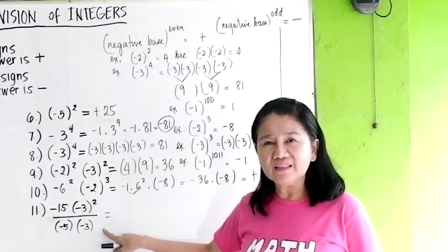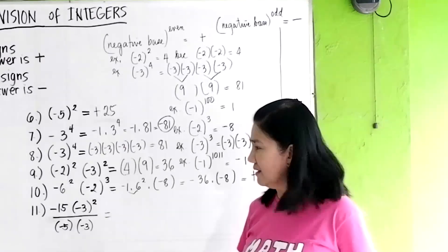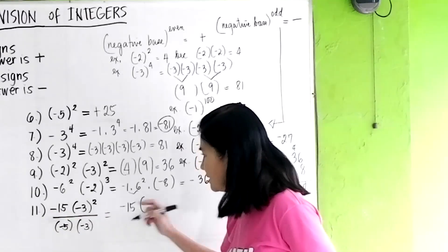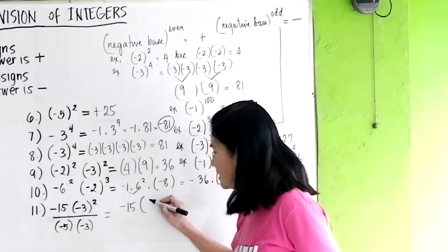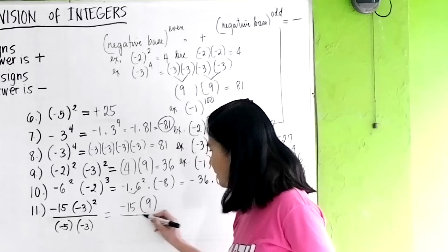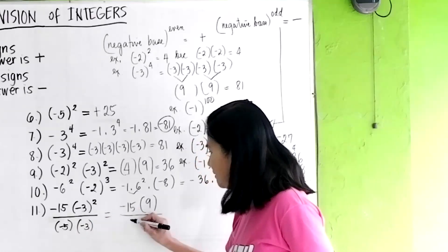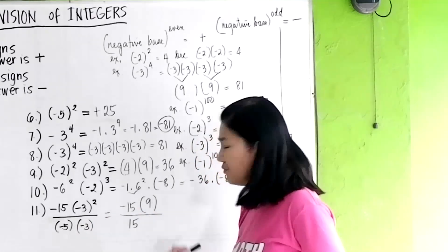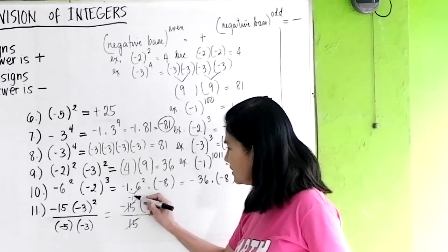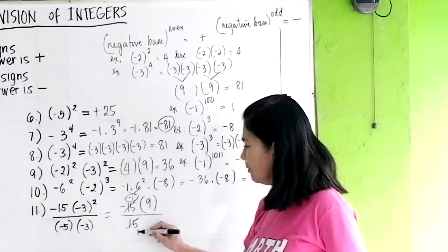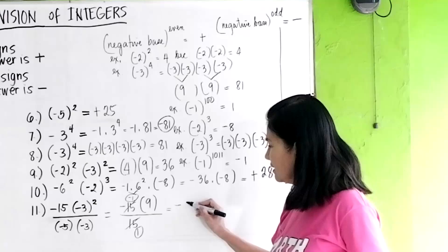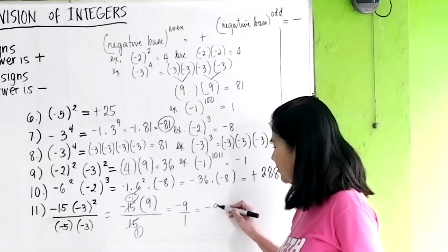Number 11 — a little more complicated. Negative 15 times negative 3 squared: negative 3 times negative 3 is positive 9. Over negative 5 times negative 3, which is positive 15. We can cancel 15 and 15, giving negative 1 and 1. Negative 1 times 9 is negative 9 over 1, giving you negative 9.